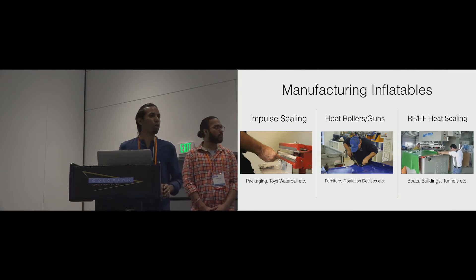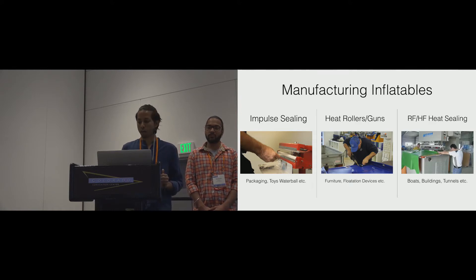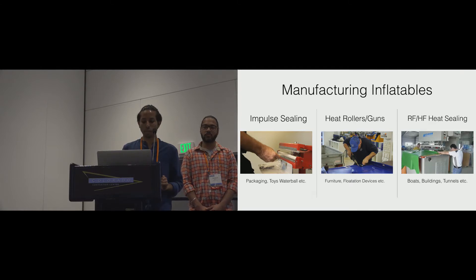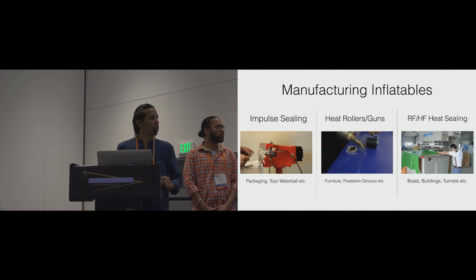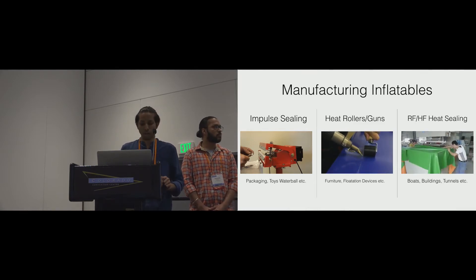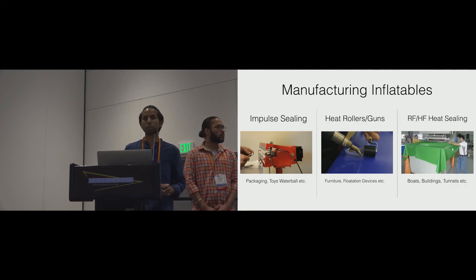You can go to a Walmart or a Home Depot store and buy inflatables, and commercially available inflatables such as these, rafts, boards, and things that you can play with, are fabricated in the industry mostly through manual processes. And common practices involve the use of impulse sealers, heat rollers, and RF sealing mechanisms. However, a commonality between all these techniques is applying heat and pressure to seal two layers of fabric.